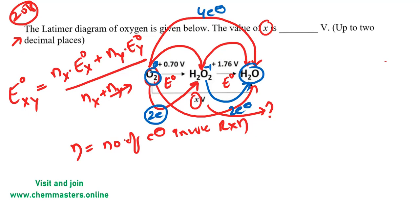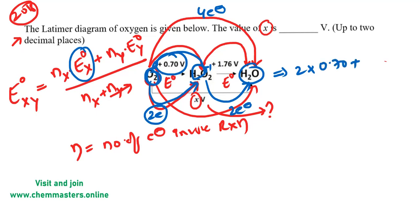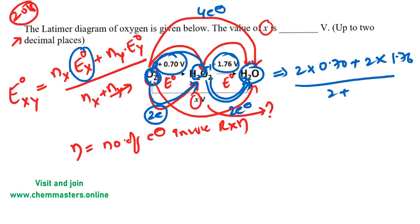Now substituting the values: nx for the O₂ to H₂O₂ conversion is 2 electrons, with E°x = 0.70 V; plus ny = 2 for the second step, with E°y = 1.76 V; divided by (2 + 2) = 4. This gives us the value 1.23 V as the answer.